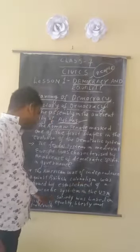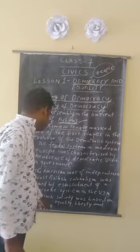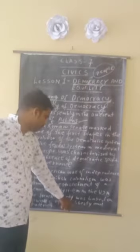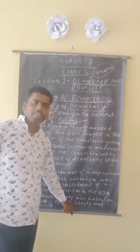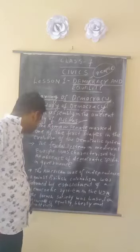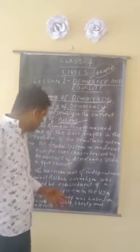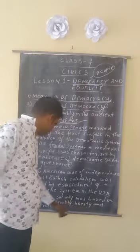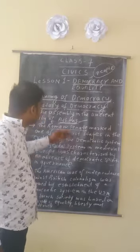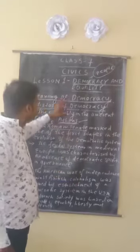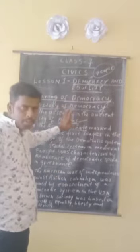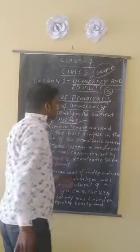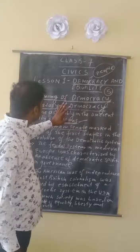Lastly, French society was based on the principles of equality, liberty, and fraternity. Equality means all are equal in the eyes of law; liberty means freedom; and fraternity means brotherhood. When you work with equality, freedom, and fraternity, you can choose a good and long-lasting form of government — one where elections are held every five years.